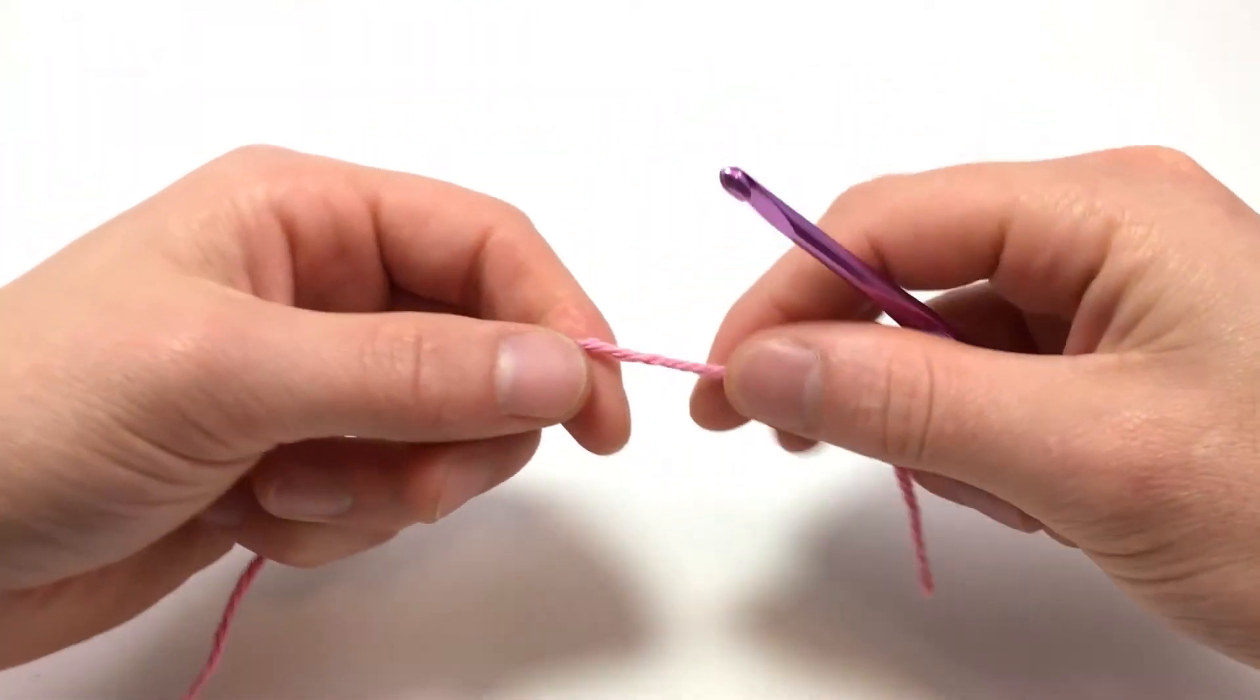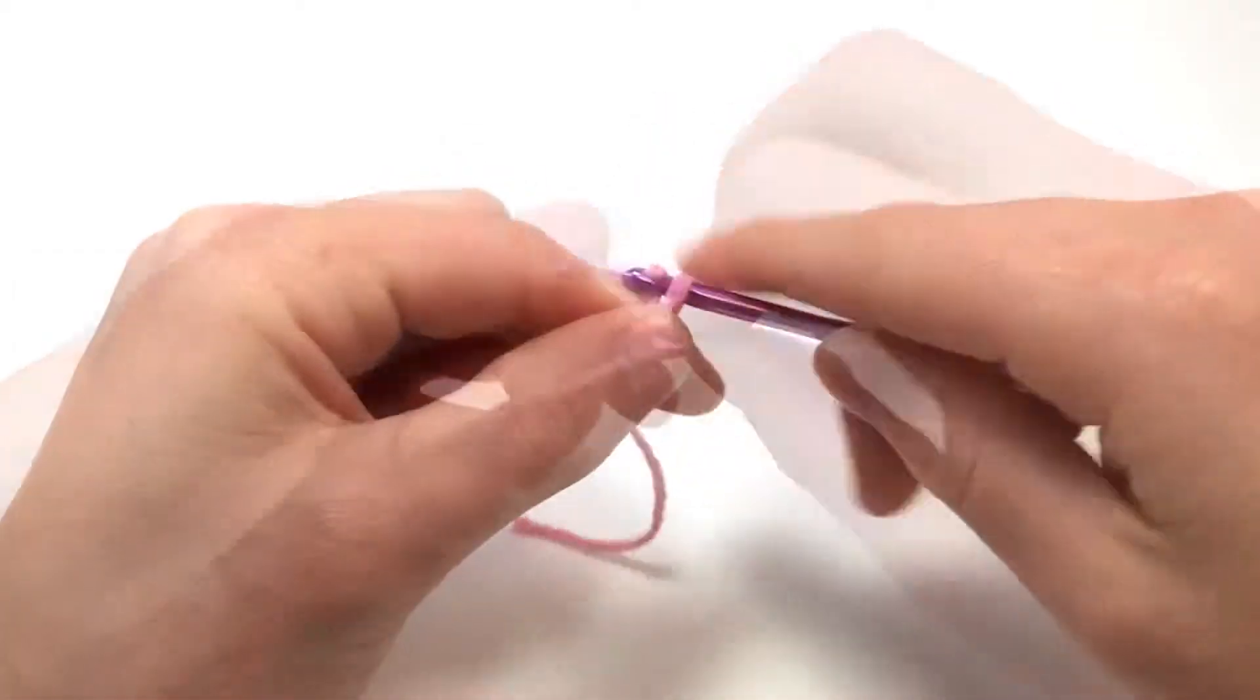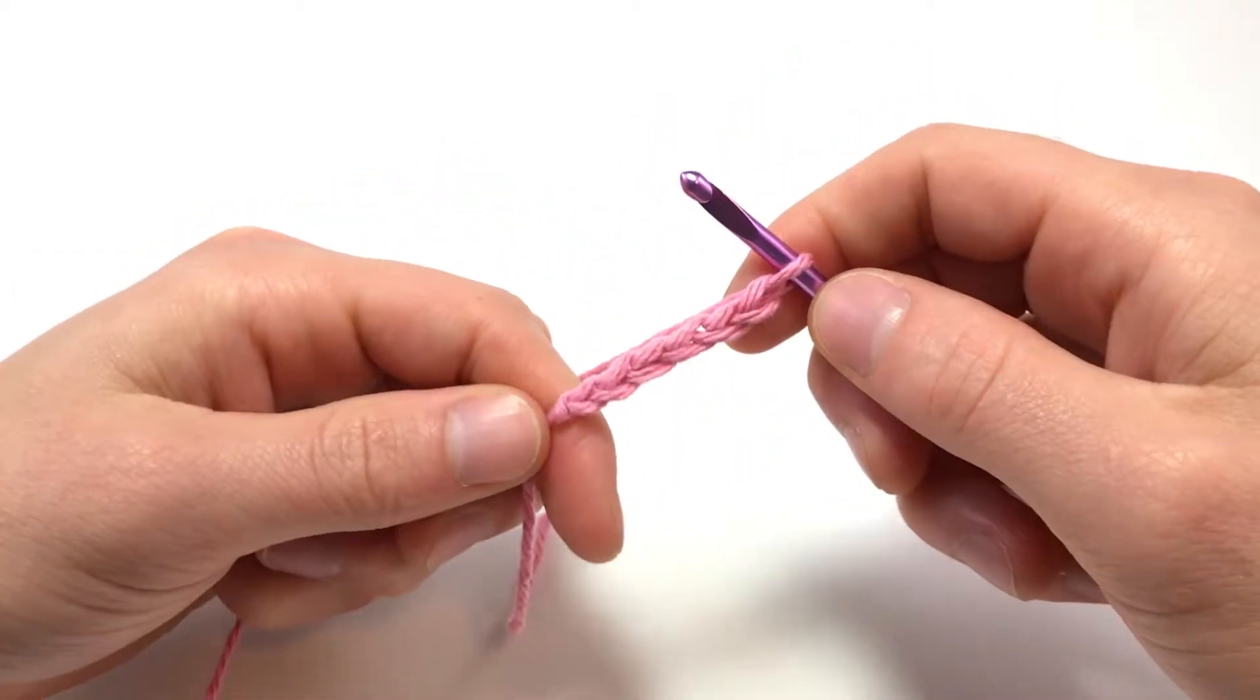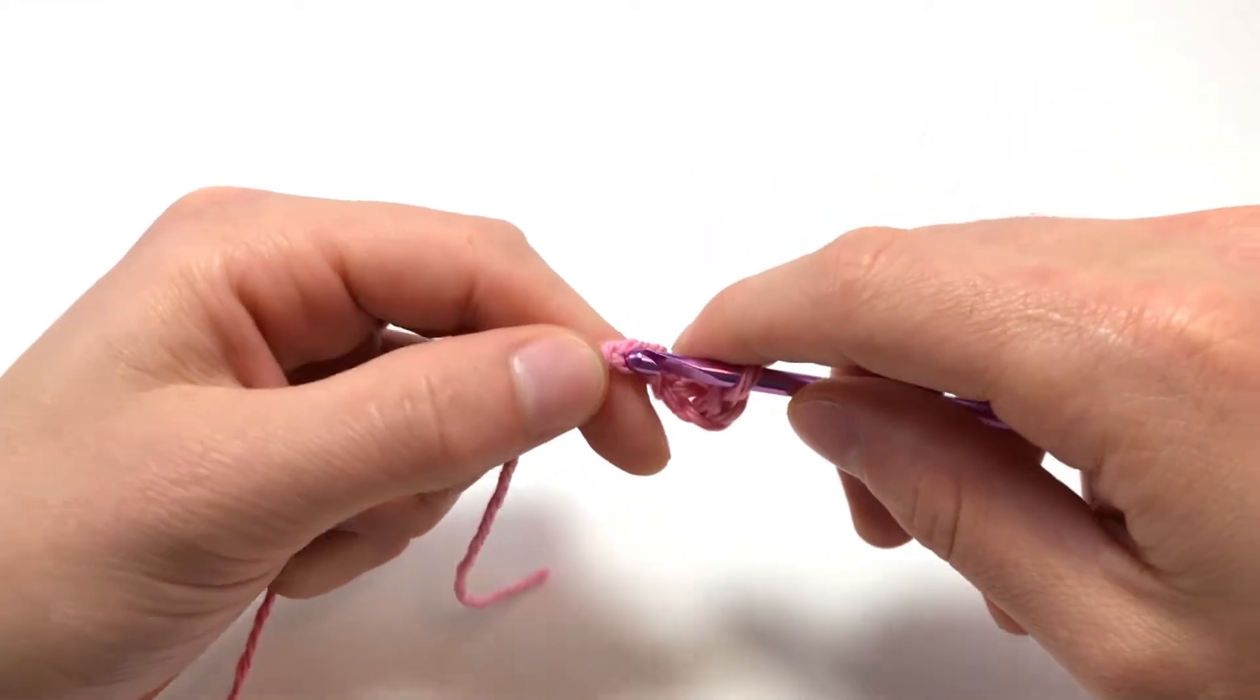Here's how it's done. Usually you'll be making these into a ring of chain stitches. So to start let's chain 6 and connect the chains with a slip stitch to make a ring.